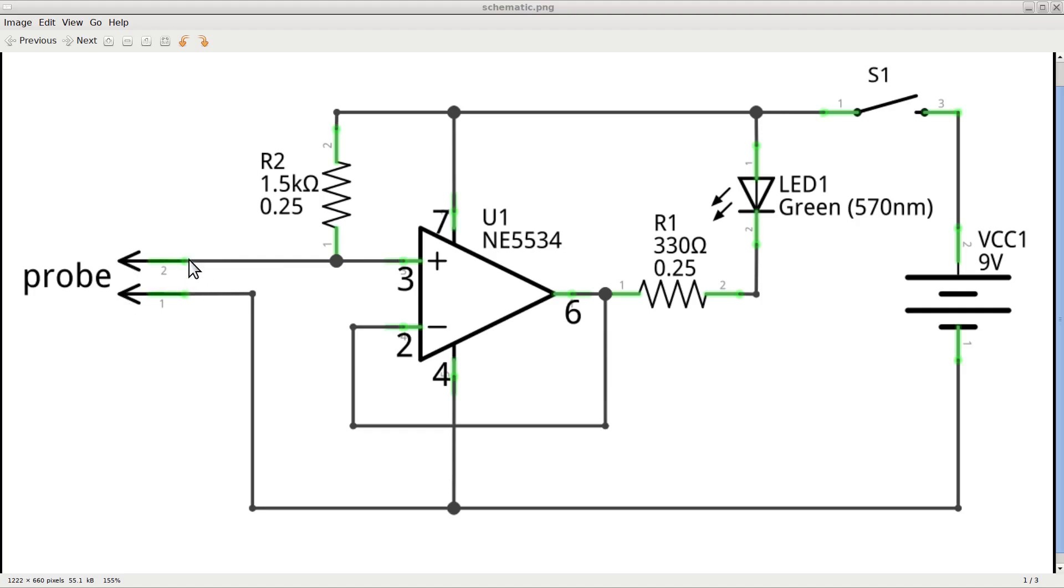If the resistance of the solution is low enough, the voltage of the non-inverting input will lean toward the ground, making the op-amp output switch to low, which in turn will turn on the LED. Simple enough, don't you think?